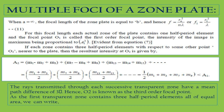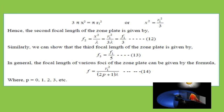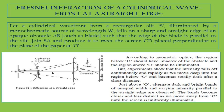In the zone plate, the red focus is nearer to the plate than the violet focus — that is, F_violet is less than F_red. In the case of a convex lens, the case is opposite: the violet focus is nearer than the red focus.